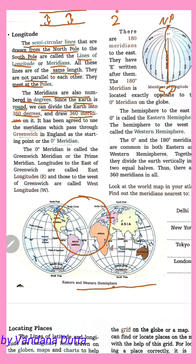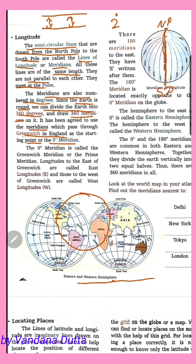It has been agreed to use the meridian which passes through Greenwich in England as the starting point — the zero meridian. This line is called the prime meridian, also known as the Greenwich meridian.